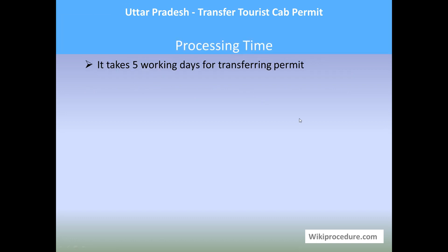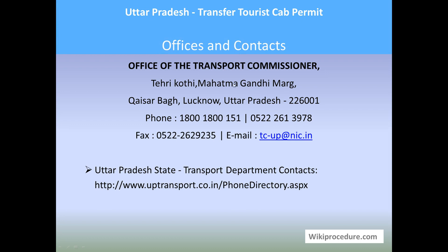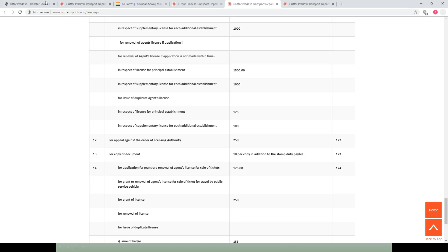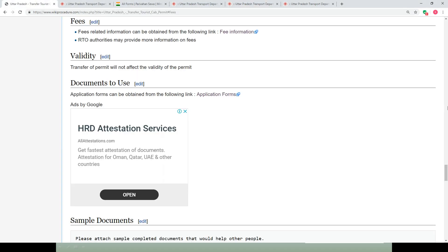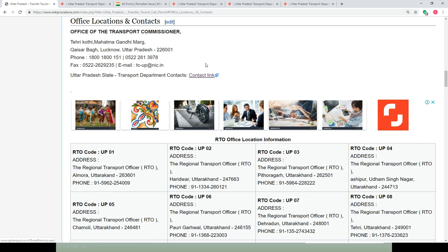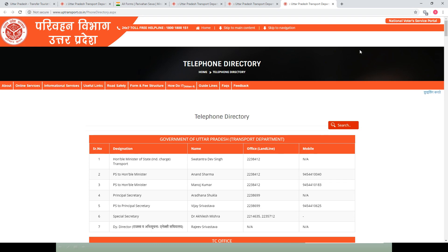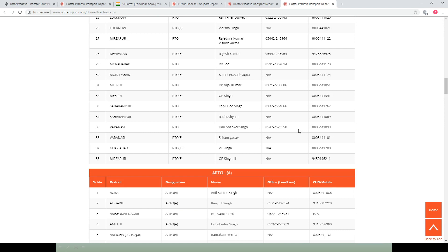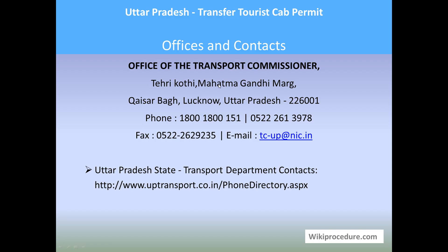Processing time: it takes 5 working days for transferring the permit. Offices and contacts: the office of the Transport Commissioner, Mahatma Gandhi Marg, Lucknow, Uttar Pradesh — phone, fax, and email details are provided for personal-level interaction to get information or clear any complaints. A link is also provided to reach the contact page of the Uttar Pradesh transport portal.